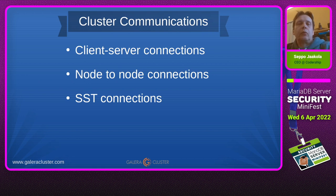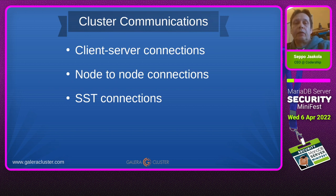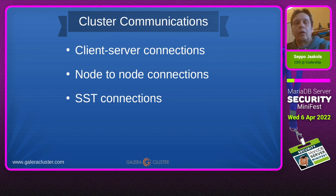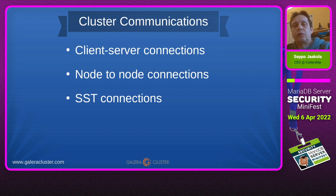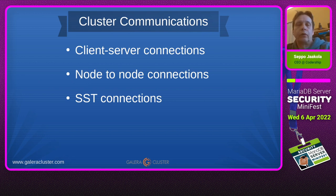Then, cluster communication — how much communication happens between nodes and clients in the cluster. First, there are client-server connections, which are native MariaDB connections. Then we have node-to-node connections, which are replication connections carrying transactional replication data. And finally, the SST — State Snapshot Transfer — connections, where a joining node requests a full donation of database contents, which is then transferred over the network. That is quite a vulnerable state.